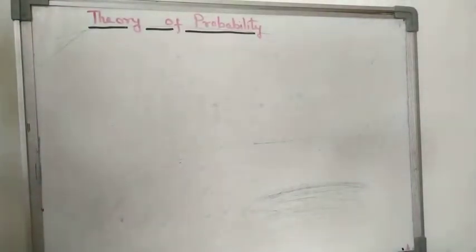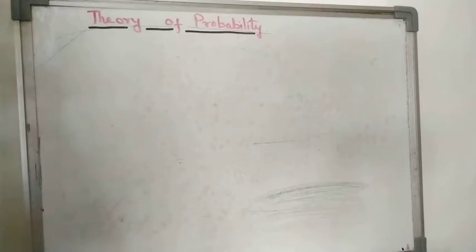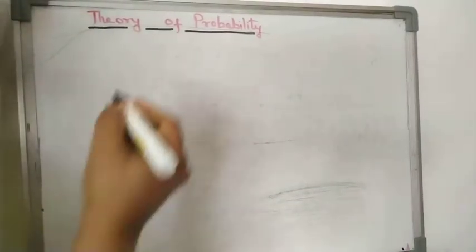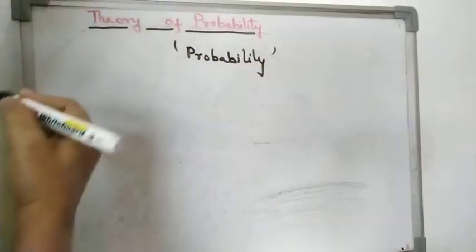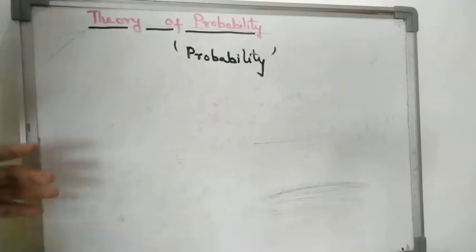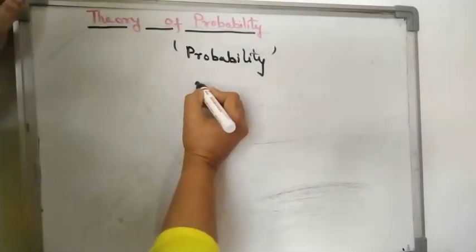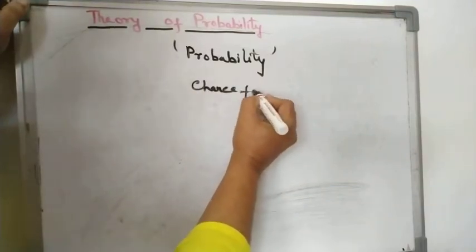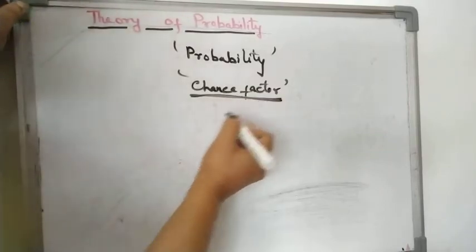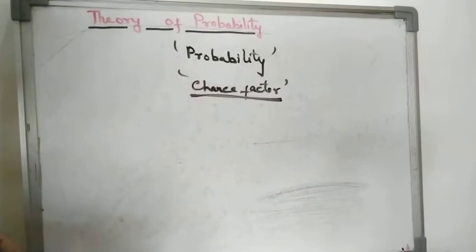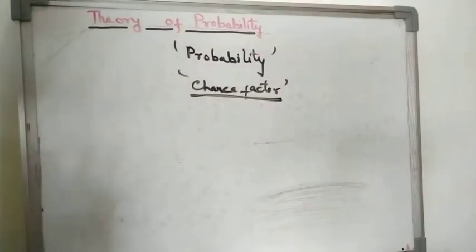Today we are going to start a new chapter — Chapter 3: Theory of Probability. Before starting, let me clarify what probability means. Probability means the numerical evaluation of a chance factor. Wherever there is a chance factor or uncertainty involved in any activity, the numerical evaluation of that chance factor is called probability.